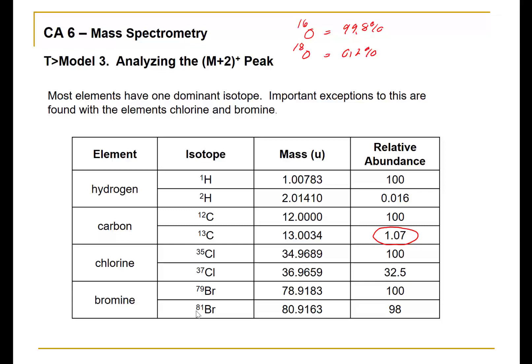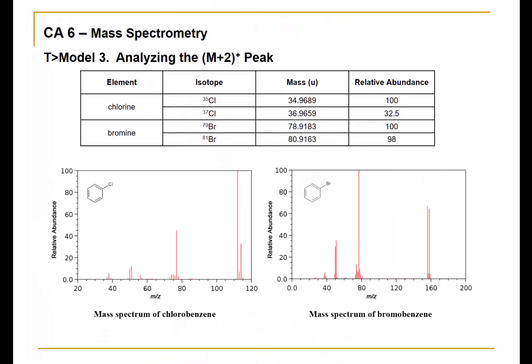I would now like to look at some mass spectra involving molecules that contain chlorine and bromine. I've repeated the isotopic data for chlorine and bromine in the table, and here are the corresponding mass spectra for chlorobenzene and bromobenzene. Initially I show you these two spectra side by side so you can look for common patterns.